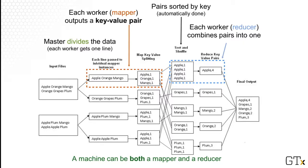What you just saw was a simple but complete MapReduce program, and this exact same program would also work for large datasets with billions of files and millions of words. In other words, if you want to write a program to handle large datasets on Hadoop, the most important thing is to figure out how to express it as a series of map and reduce operations.